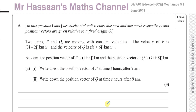Welcome back to Mr Hassan's Maths channel. I'm now answering question six from the June 2019 Mechanics M1 GCE paper. This question is about vectors. It states that i and j are horizontal unit vectors due east and north respectively — so i is due east and j is due north — given relative to a fixed origin O.